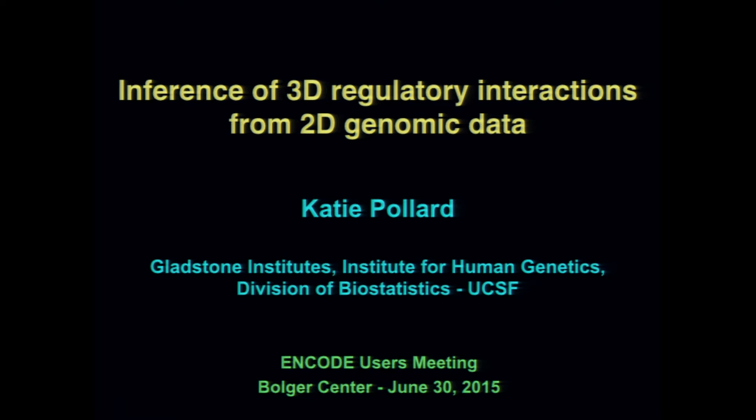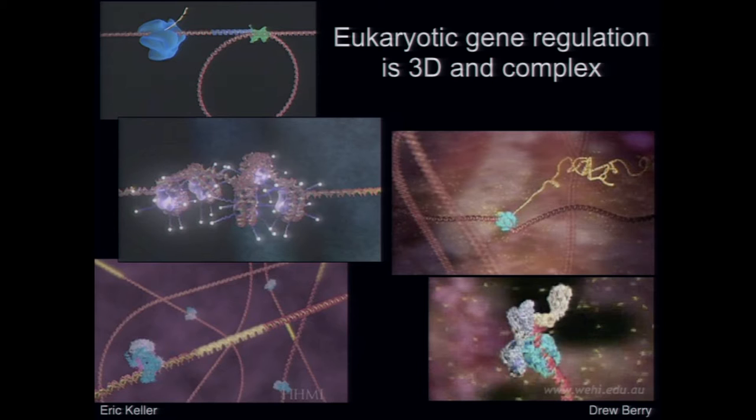It's wonderful to be here to tell you about some work we've been doing in my lab to understand how genes are regulated in 3D structures that form between distal enhancers and promoters. I wanted to start with some pictures that are more elaborate than the usual line with blobs. These are from colleagues who've attempted to make videos or still graphics of the process of transcription, to remind us that this is happening in a three-dimensional space involving many proteins and DNA and chromatin forming complex structures.